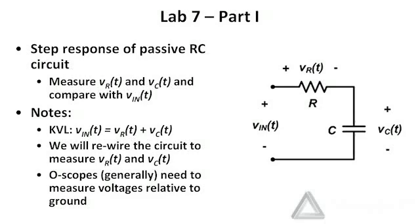Now we have two potential voltage differences across this circuit: V sub R of T, the voltage across the resistor, and V sub C of T, the voltage across the capacitor.